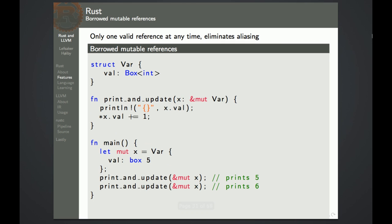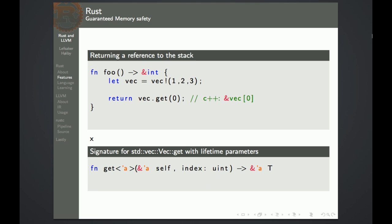If you want to mutate x, we have to declare it as mutable and pass along mutable references. Another problem that C and C++ expose is the ability to return a pointer without guaranteeing that the memory is still there. Here we see an example where a vector is created on the stack and then a reference to it is returned. This is not allowed in Rust, because whenever you return a reference, you have to guarantee that it's going to live long enough. In the signature of the get method on the vector, the reference that is returned is bound to the lifetime of the vector itself. Therefore this foo function is not allowed, because the lifetime of the returned reference is longer than the lifetime of the vector.